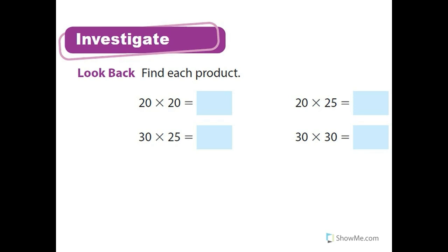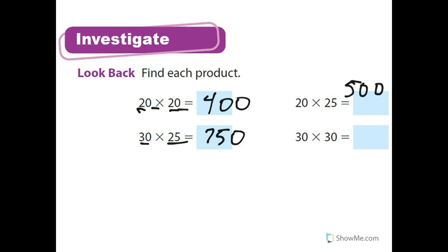We've done this, where we do 2 times 2, we've got 4, add the two zeros. 3 times 25 is 75, add that one zero. 2 times 25 is 50, add that zero. 3 times 3 is 9, add those two zeros. So that's how we do that.